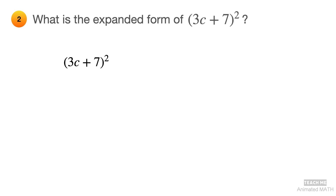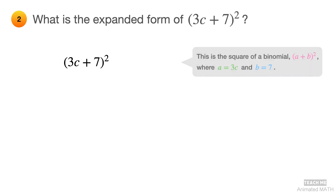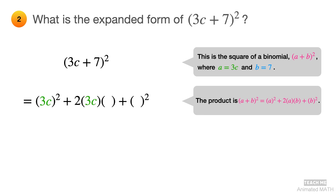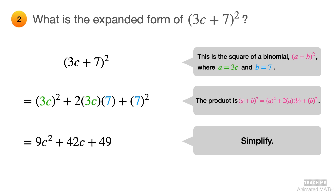Use the perfect square add times add pattern, which is (a + b)², but with a equal to 3c and b equal to 7. Its product is a² + 2ab + b². Substitute 3c for all a's and 7 for all b's, then simplify the expression. The final answer is 9c² + 42c + 49. Note: the laws of exponents are very useful for simplifying this type of expression, so be sure to click the i button to watch our video on integer exponents.